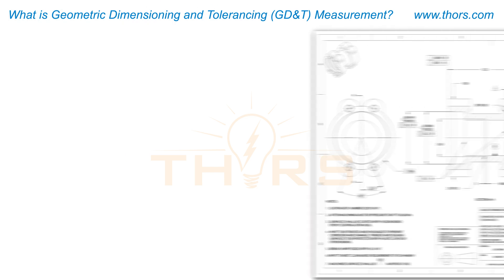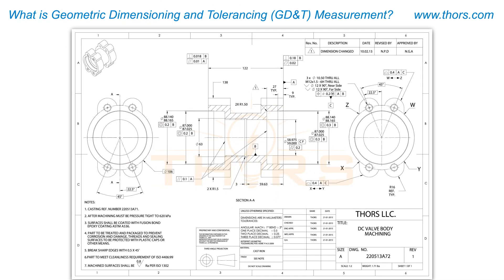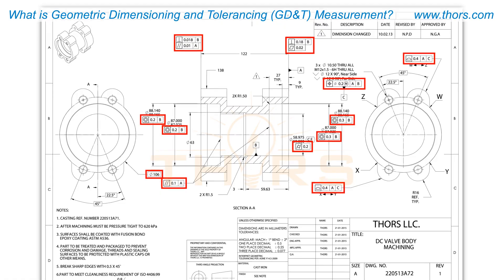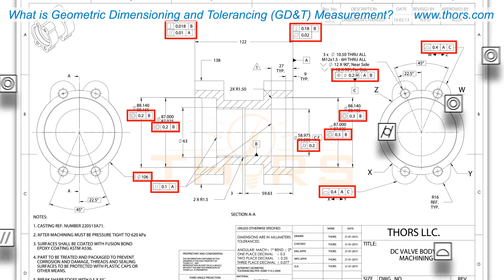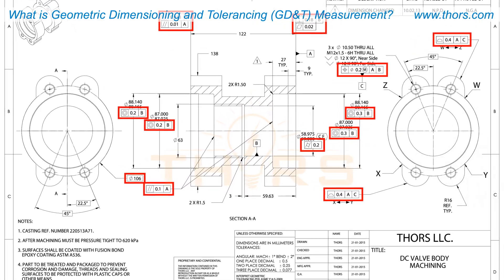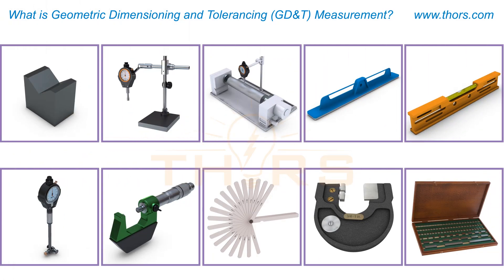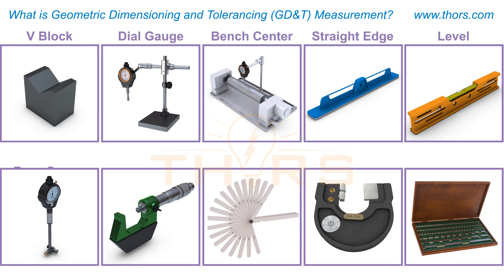Engineers and manufacturers use engineering drawings with GD&T symbols and standards to communicate precise and unambiguous part tolerances. GD&T measurements are commonly performed using shop floor tools such as V-blocks, dial gauges, bench centers, straight edges, levels, bore gauges, micrometers, and various other gauges.